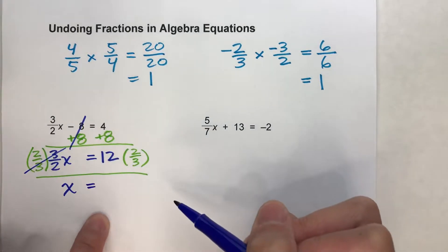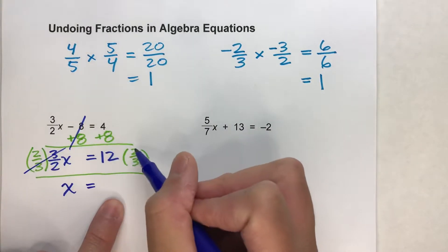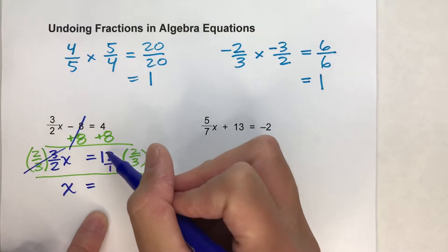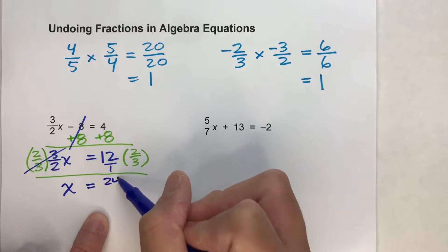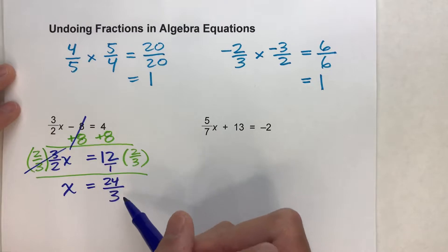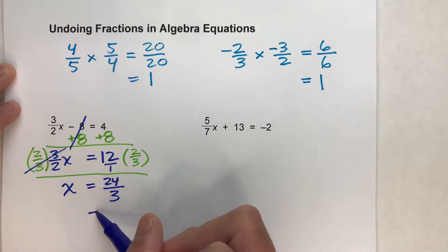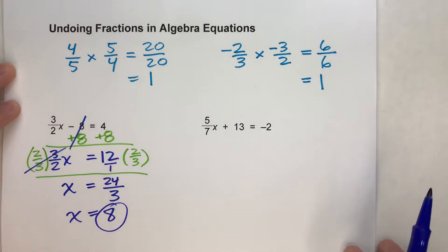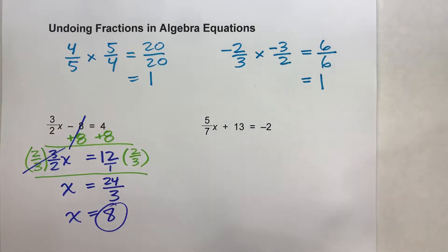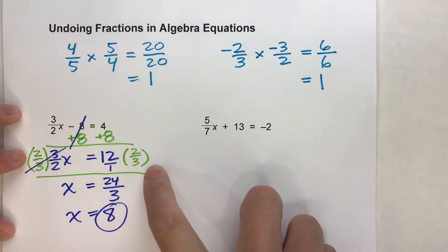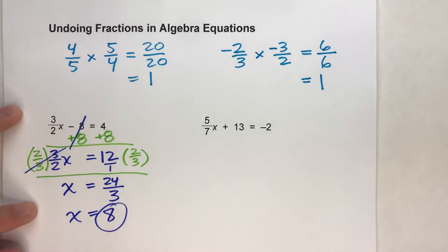Now on the other side, drop down to my equal sign, I have 12 times 2 thirds. I'll put a 1 under the 12 to make it a little easier on myself. 12 times 2 is 24 over 1 times 3 is 3. 24 thirds, which I know simplifies because 24 divided by 3, that simplifies to just 8. So x is 8. So notice, the new move here. To undo that fraction, multiply by the reciprocal to undo it and make 1 whole x. We'll do another example.